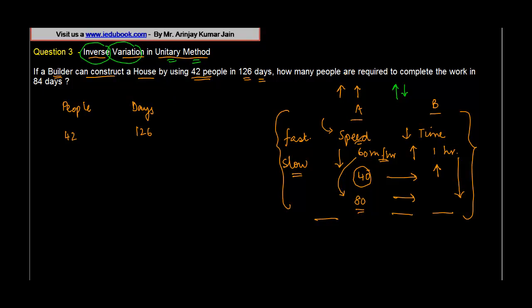How many people are required to complete the work in 84 days? Basically, you are told that the number of days has been reduced from 126 to 84. Given that the number of days has reduced, what will be the impact?